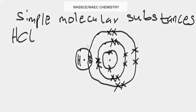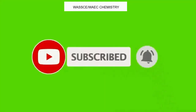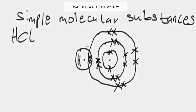That is basically how you represent the dot-and-cross diagram of simple molecular substances for chemistry. I hope you learned something interesting from this video. If you are new to the channel, check the description below to join our Telegram channel for instant notifications. Subscribe, like, share, and comment. If you have any specific questions regarding simple molecular substances and dot-and-cross diagrams, feel free to ask in the comment section and I'll respond. See you in the next video.